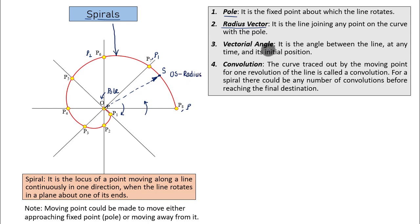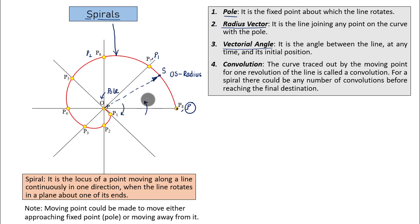Next is the vectorial angle, which is also very easy to understand if you understood radius vector. The vectorial angle is the angle between the line at any time and its initial position. So if this is the initial position P and after some time it has reached point S, the angle traversed — theta — is what is referred to as the vectorial angle.